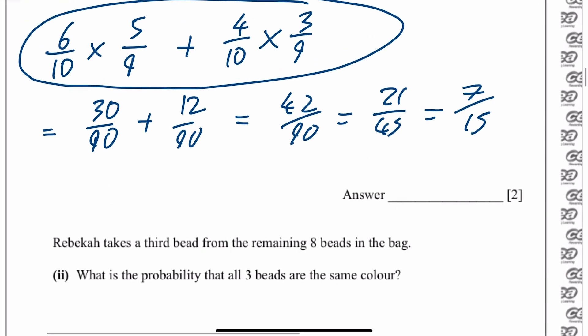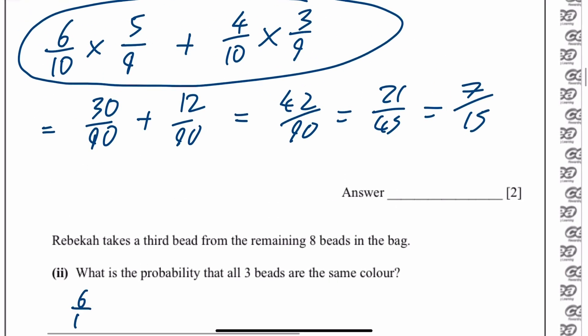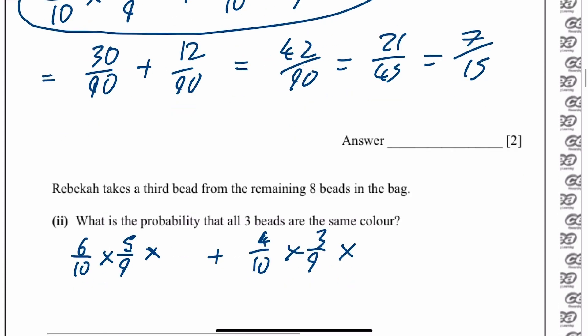So you want to have all three beads being the same colour. Let me write that down very quickly there. 6 over 10 times 5 over 9. I'm going to leave a gap because we're going to have another sum in. I have 4 over 10 times 3 over 9. And then I'll have another sum here.